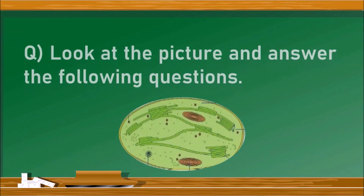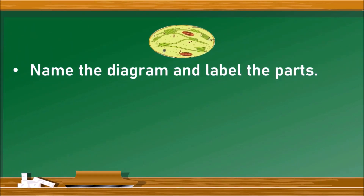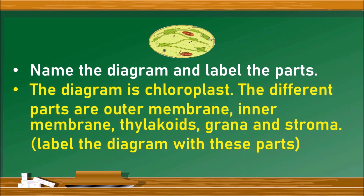The next question is diagram-based: look at the picture and answer the following questions. The first question is to name the diagram and label the parts. Sometimes parts will be indicated as X, Y, Z or A, B, C and we have to write the names accordingly. The answer is: the diagram is a chloroplast. The different parts are outer membrane, inner membrane, thylakoids, grana, and stroma.